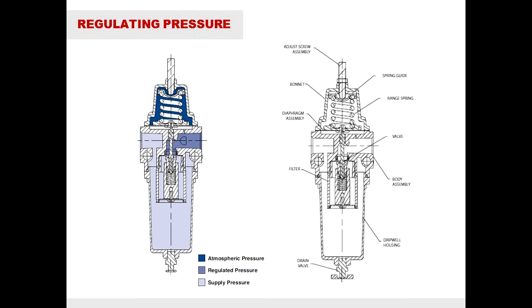The process material then travels through the filter towards the valve. Once the process material passes through the orifice of the valve, the pressure is reduced in the regulated pressure housing.